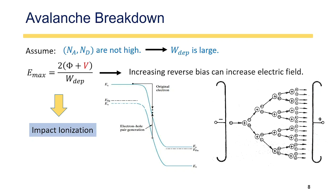Comparing Zener and Avalanche breakdown: since Zener diodes are heavily doped, the reverse bias voltage required for Zener breakdown is lower compared to Avalanche breakdown. So Zener breakdown occurs at a lower voltage, while Avalanche breakdown occurs at a higher voltage. Additionally, Zener breakdown requires higher doping concentration, whereas Avalanche breakdown requires lower doping concentration.